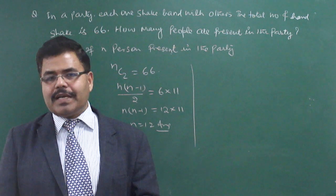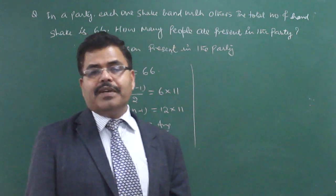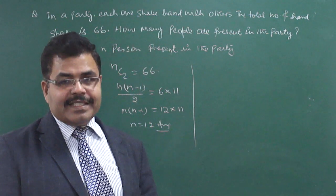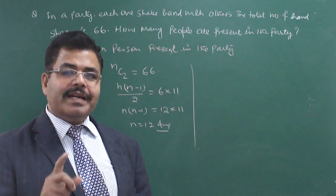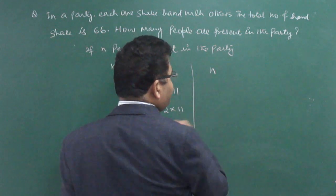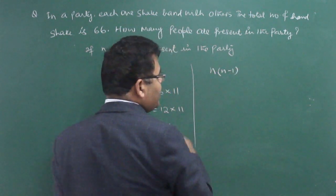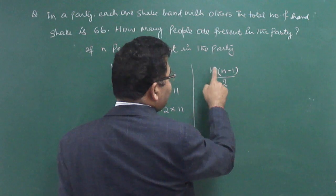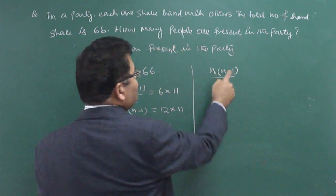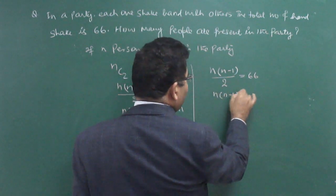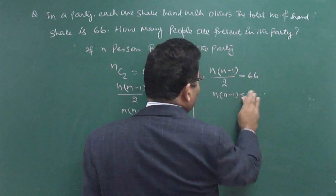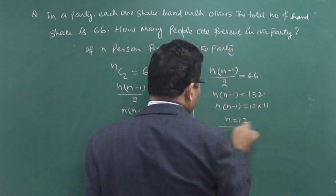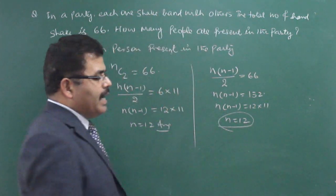If there are 5 people, each will shake hands 4 times with others, so 5 × 4 = 20 times. But in fact one handshake is being counted twice, so the total number of handshakes will be 5 × 4 divided by 2. So if N persons are present, each shakes hands with N−1 remaining people, and each handshake is counted twice, so the actual number of handshakes is N(N−1)/2 = 66. That gives N = 12, which is 12 × 11 = 132, divided by 2. Even without the formula, using common sense one can solve this question.